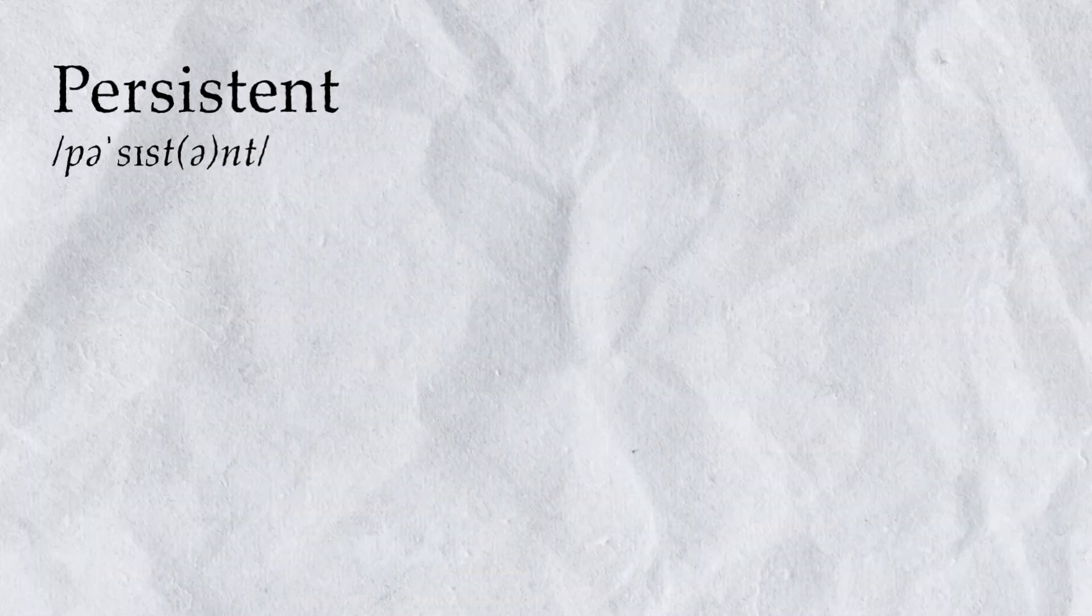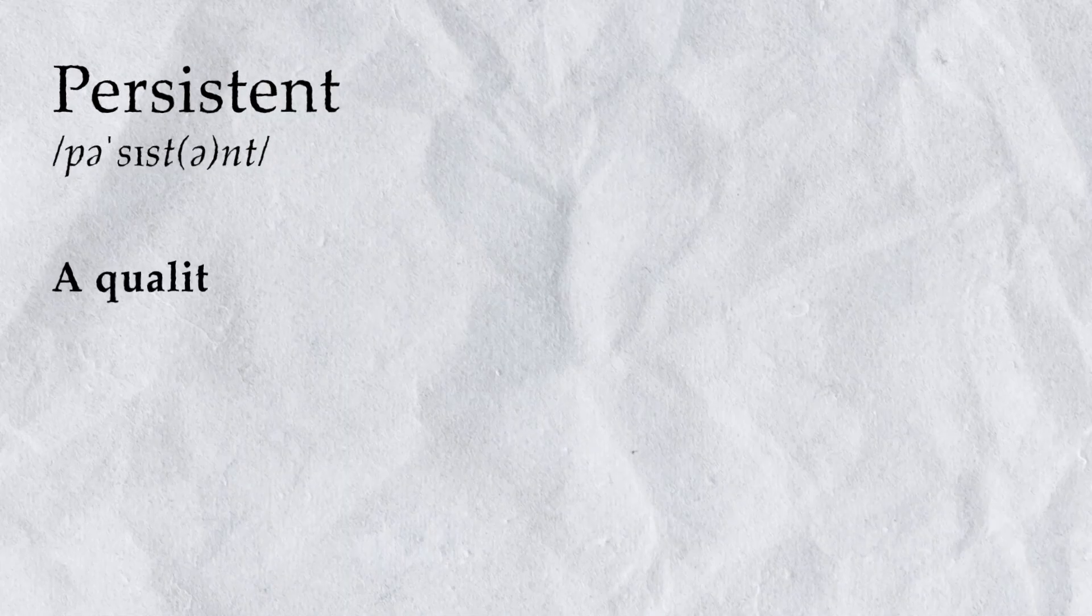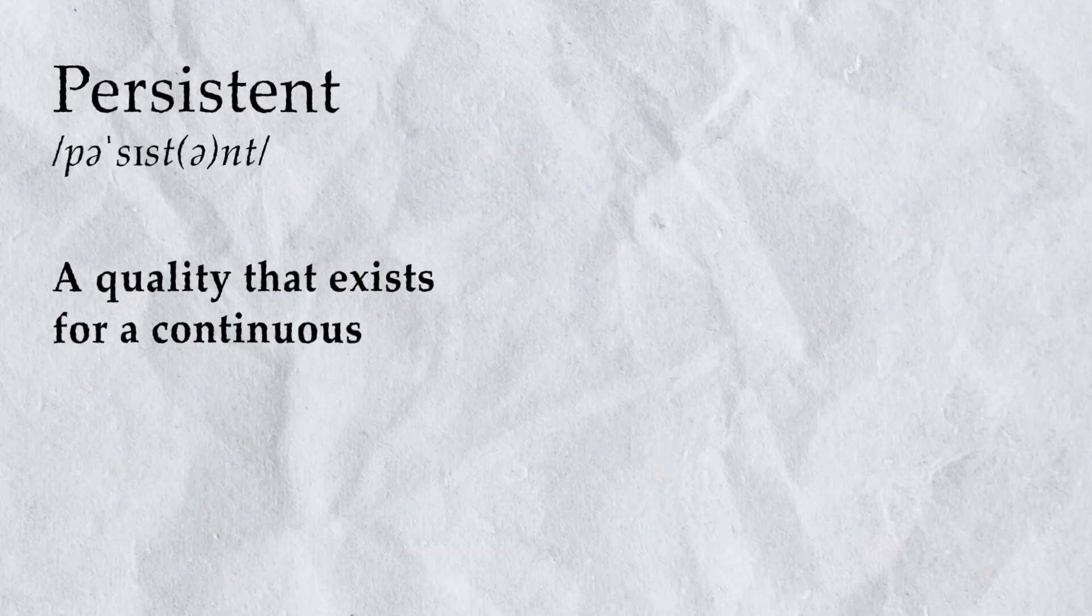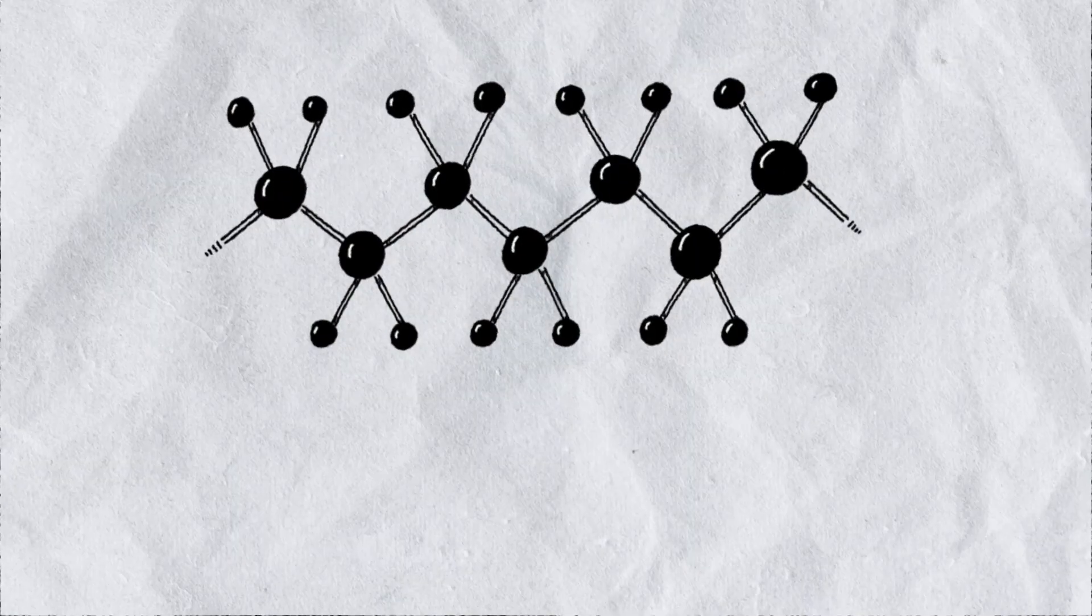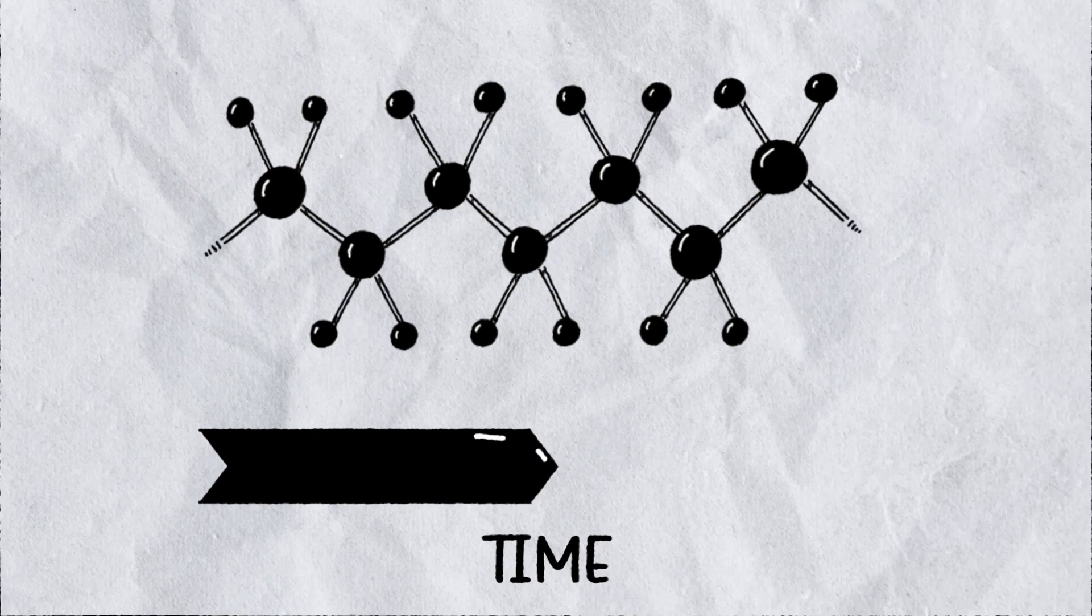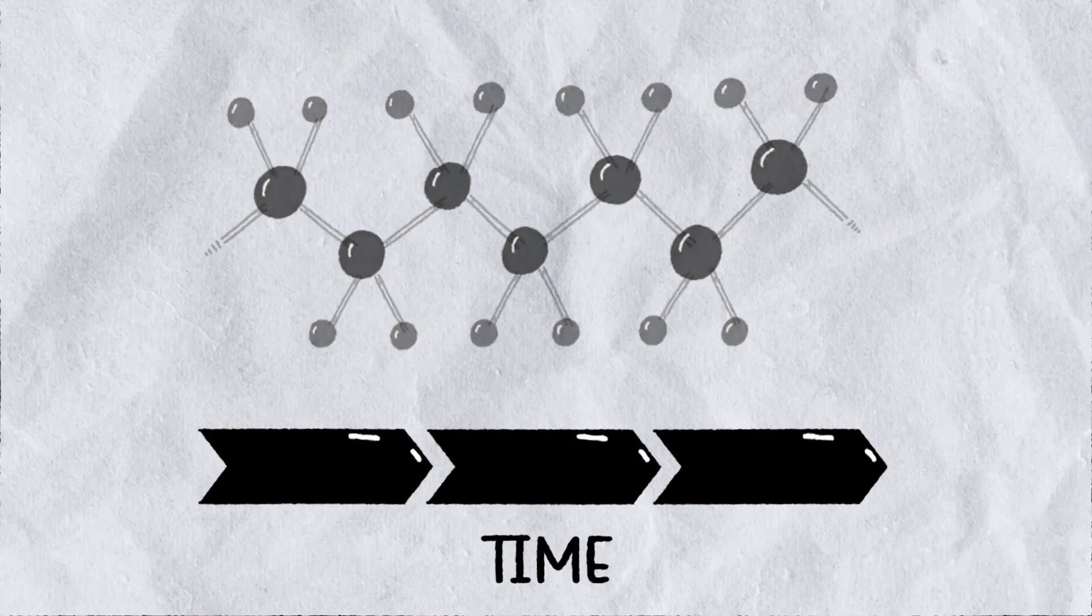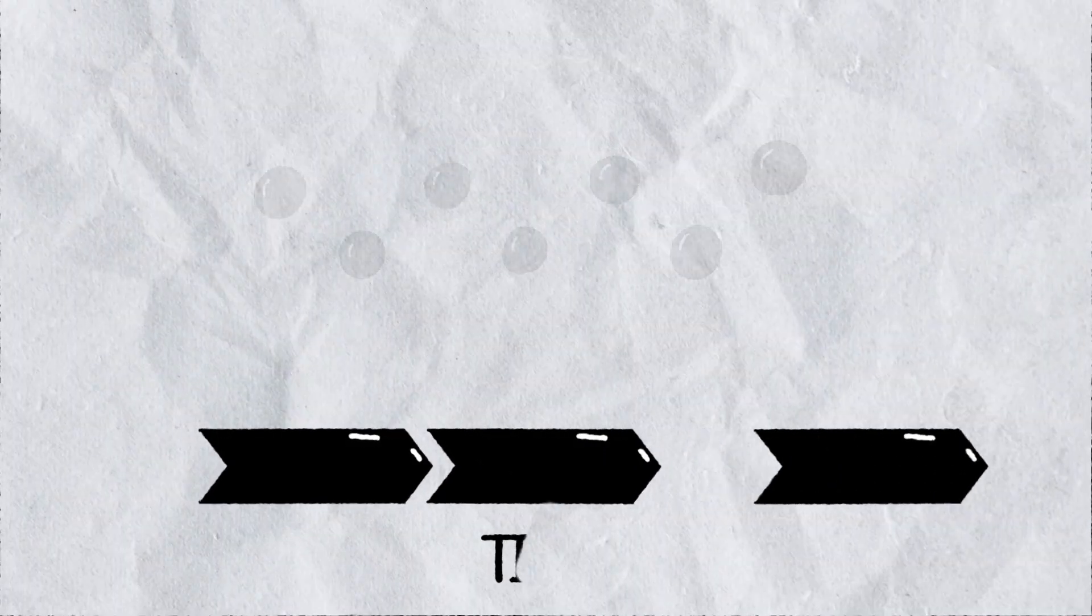In the dictionary, persistence is described as a quality that exists for a continuous or prolonged period of time. In chemistry, substances are described as persistent on the basis of the time it takes for them to break down or, to use a more accurate term, degrade.